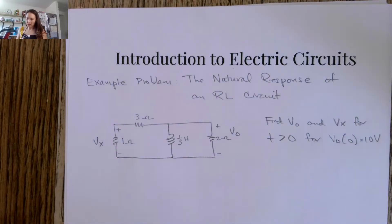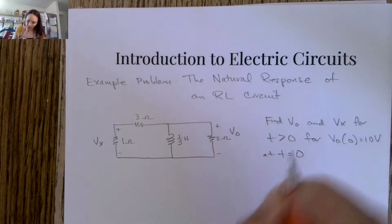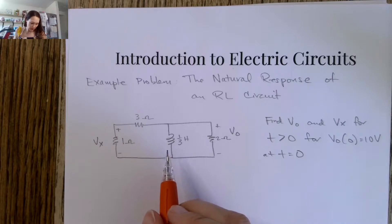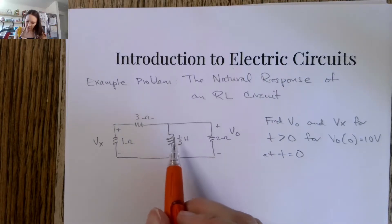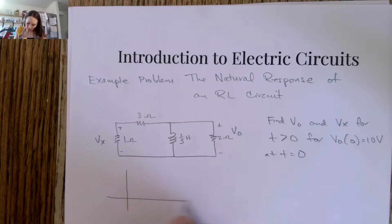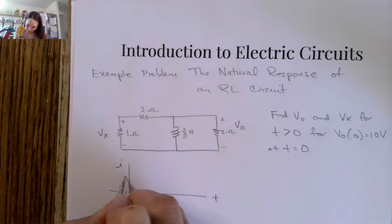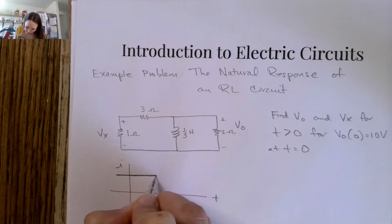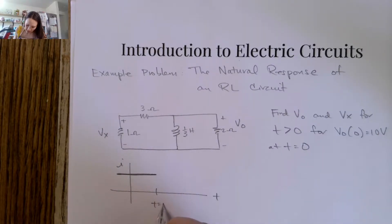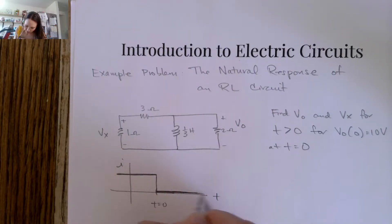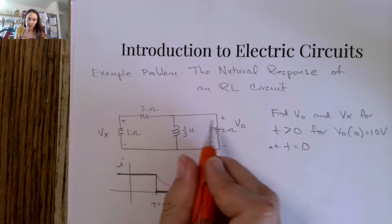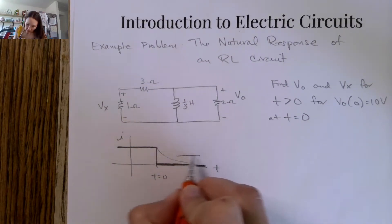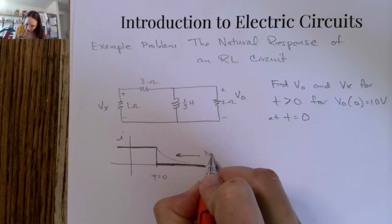We also get an initial condition of 10 volts. This is a source-free RL circuit. At time equals zero, the inductor is going to discharge. If this is connected to some current source I(t) — a constant, non-changing current source — then at T equals zero, suppose that source falls to zero, and we'll have some discharging of our inductor through these resistors. This discharge curve is what we refer to as the natural response.